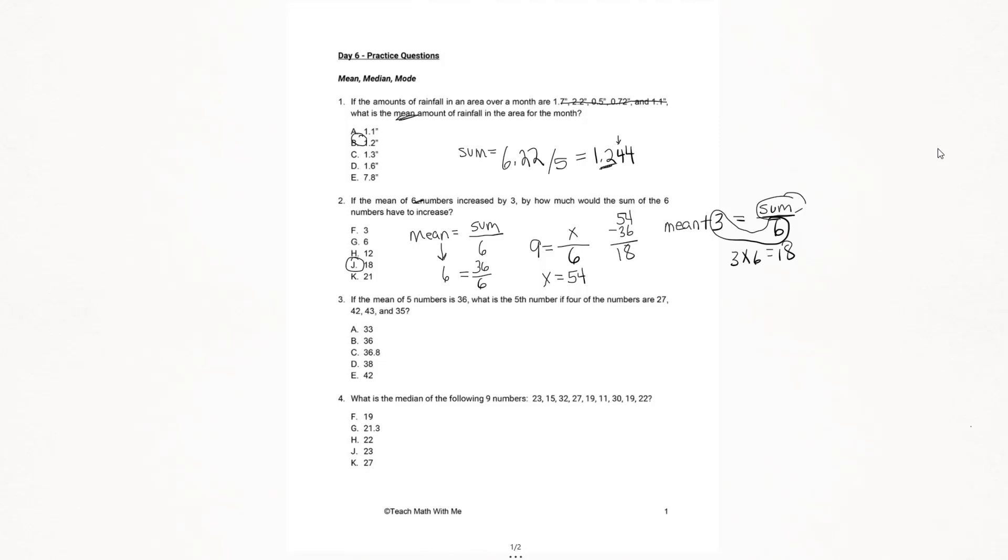Let's move on to question number three. If the mean of five numbers is 36, what is the fifth number if four of the numbers are 27, 42, 43, and 35?